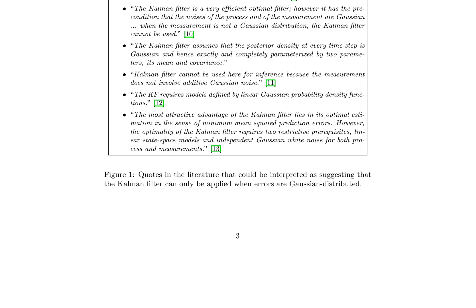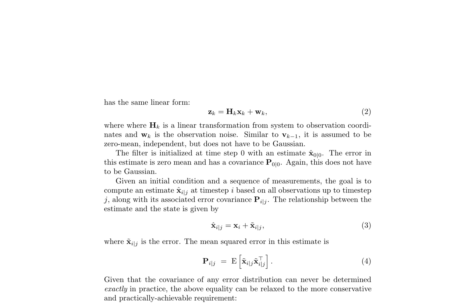The filter guarantees that the expected squared error of the system estimate decreases at a certain rate, but it does not provide information necessary to answer questions about the probability of specific events, such as the mean position estimate being within one meter of the true position. To address this limitation, Ho and Li re-derived the optimal filter from a Bayesian perspective, replacing the mean-covariance pair with the full probability density function, allowing for a more comprehensive understanding of the system's state and its associated uncertainties.